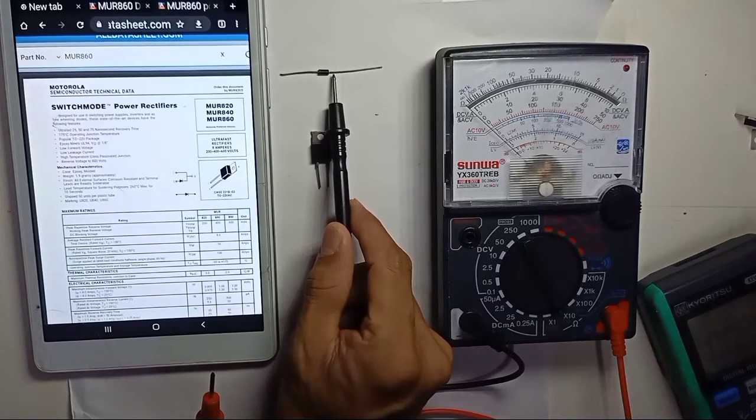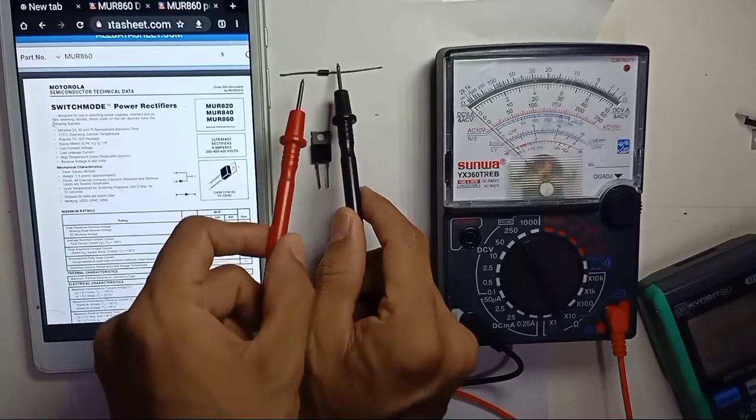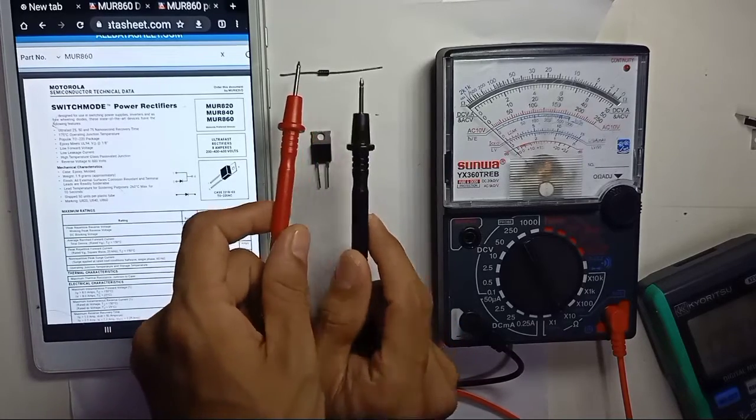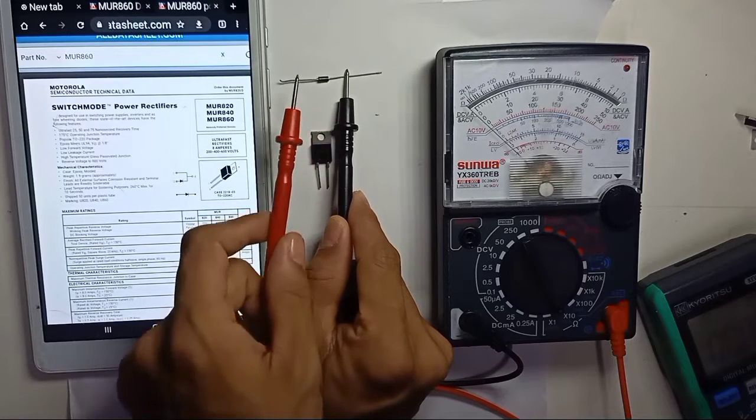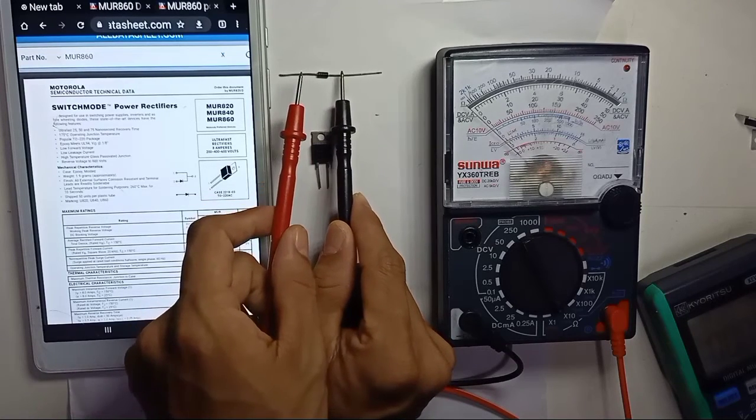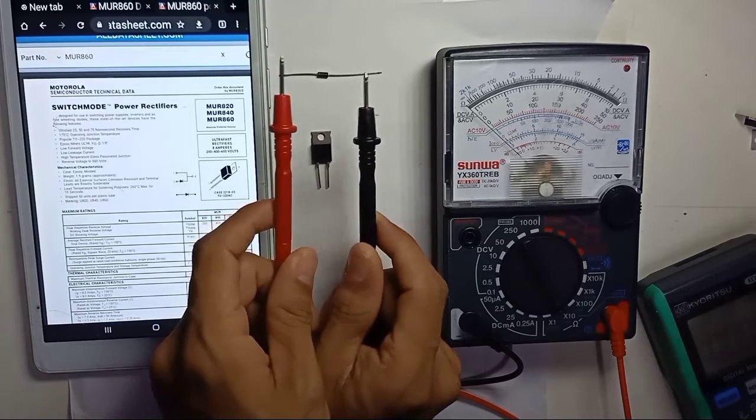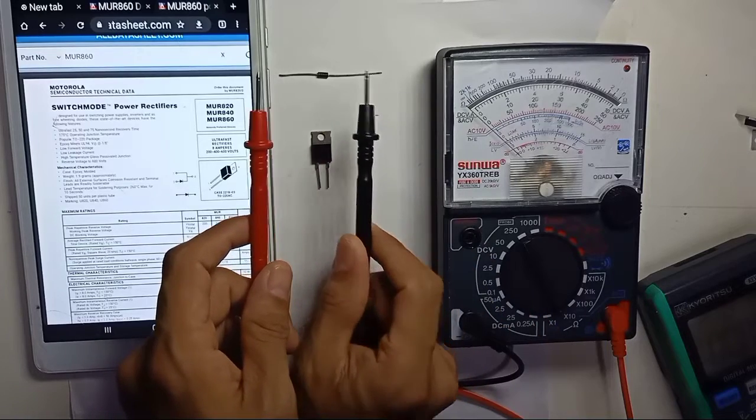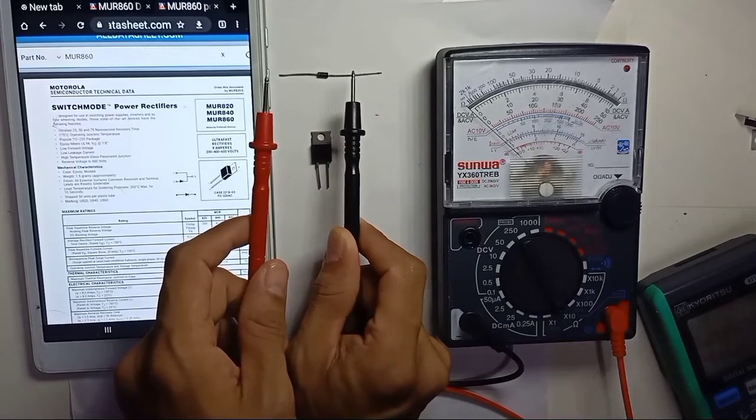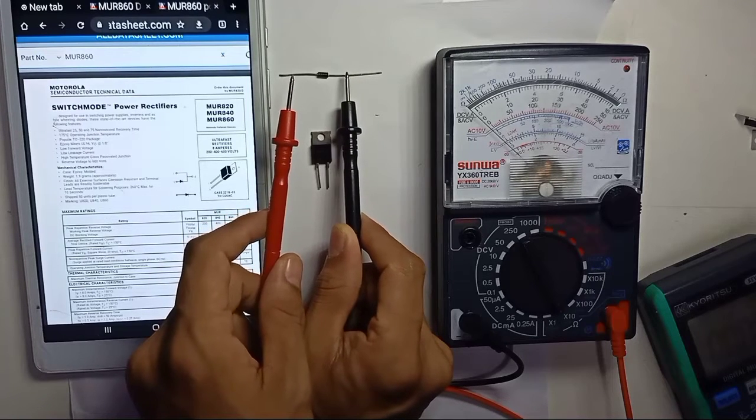The diode is anode to cathode, which means positive to negative. You have to notice about the analog multimeter: the black lead produces positive voltage and the red lead produces negative voltage. So to test the diode, positive to negative, which means anode to cathode.